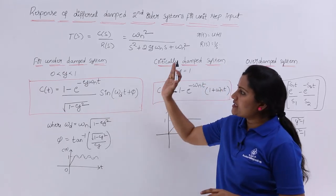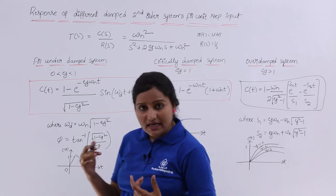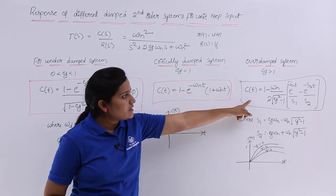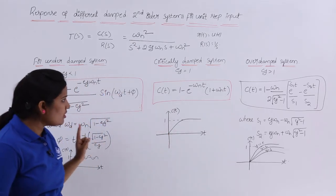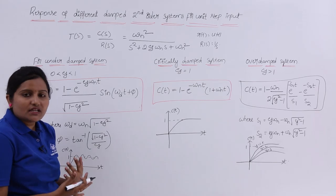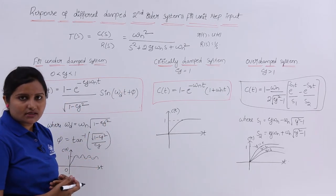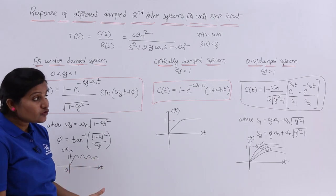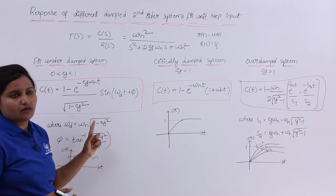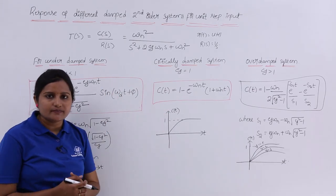So this is c(t) for the under-damped system, this is c(t) for the critically damped system, and this is c(t) for the over-damped system. All three equations are very important. In future topics we are going to use these equations, so you need to keep in mind the under-damped, critically damped, and over-damped second order system responses.